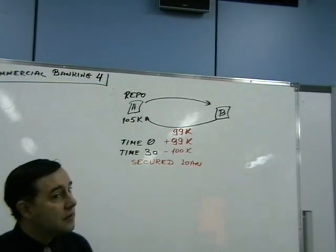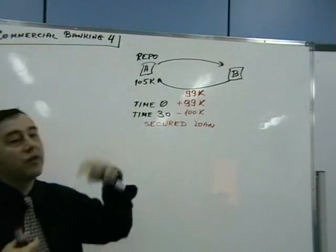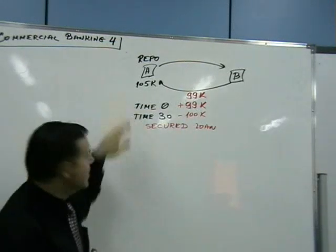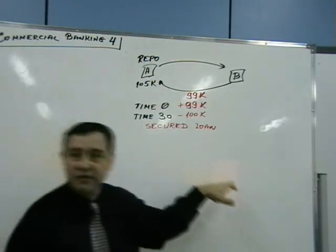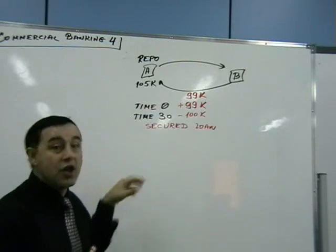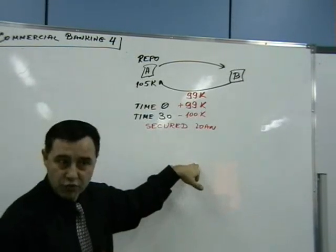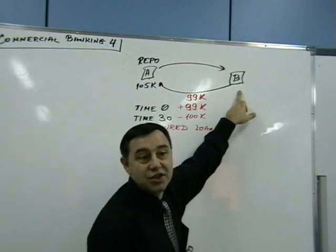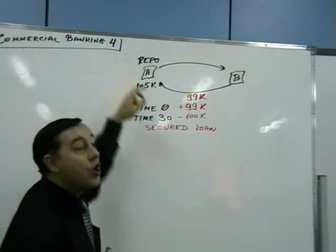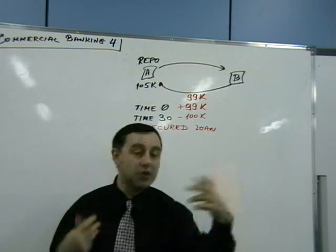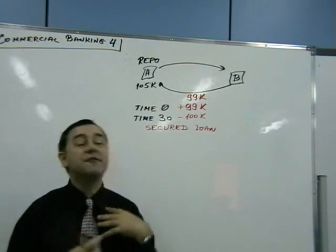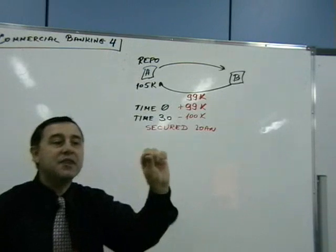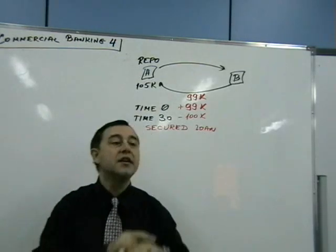There is a repo rate and a reverse repo rate. The repo rate is the yield that the selling and buyback provides to one party. When Party A executes a repo with Party B, Party B has executed a reverse repo with Party A. One party always has the repo, the other always has the reverse repo — one is the rate of lending and the other is the rate of borrowing.